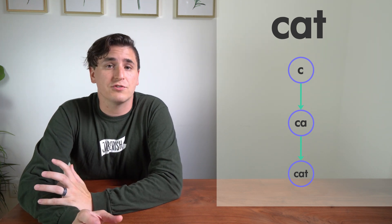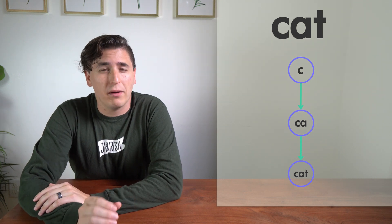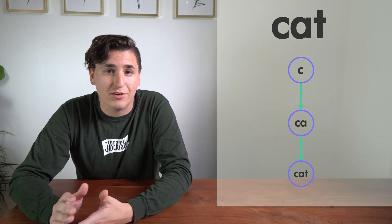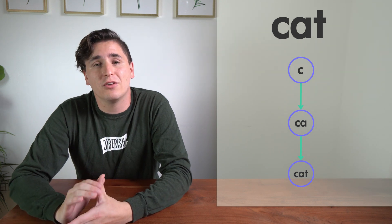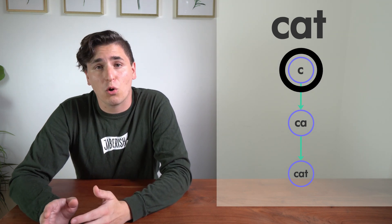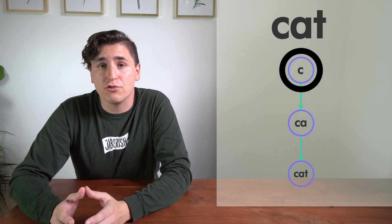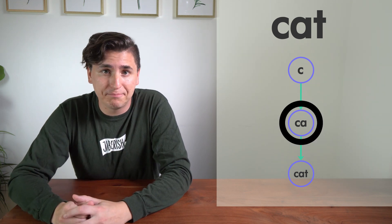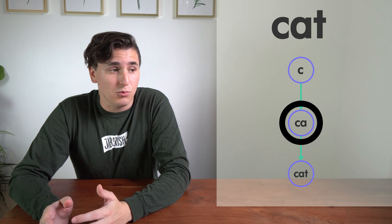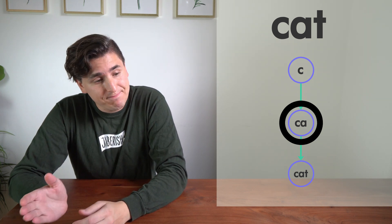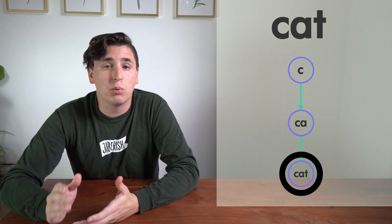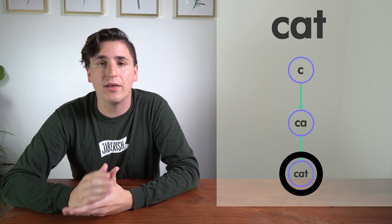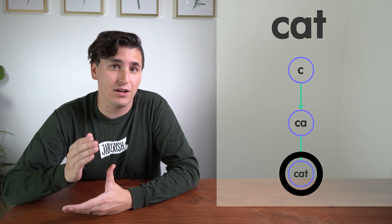To search for a given word, we start at the first letter and work our way through by looking for pointers to nodes that match the next letter. Let's search for 'cat': we start at the node for 'c', the next letter is 'a' so we hop to 'ca', then the last letter is 't' and we hop to 'cat'. We've worked all the way through without falling out of the tree, so we can conclude the word is in our library.